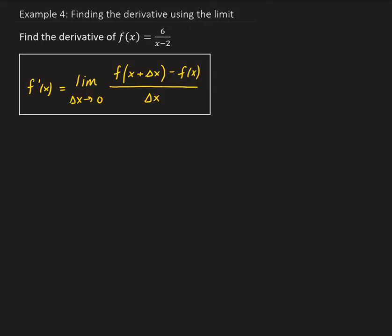In this example, we want to find the derivative of the following function, which is given as 6 divided by x minus 2. We're going to do this by using the definition of the derivative, which involves taking the limit of the difference quotient.